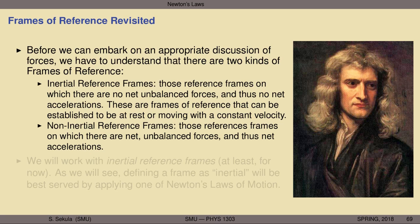Contrast that with non-inertial reference frames, where there are net unbalanced forces — and thus accelerations occur even when you don't think there should be any. If you're in a truly inertial reference frame, the velocity of an object should remain constant with no forces. But in a non-inertial reference frame, even when you think you've accounted for all forces, you may still observe that your object experiences some change in state of motion, some acceleration — indicating you're in a non-inertial reference frame.